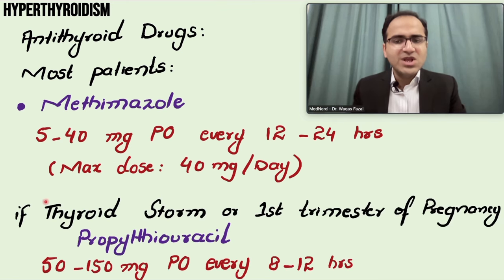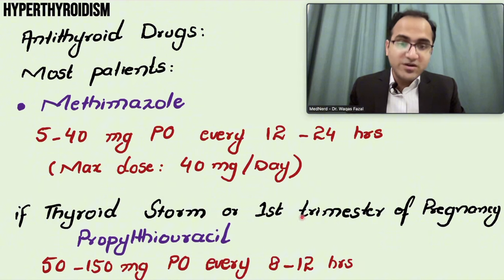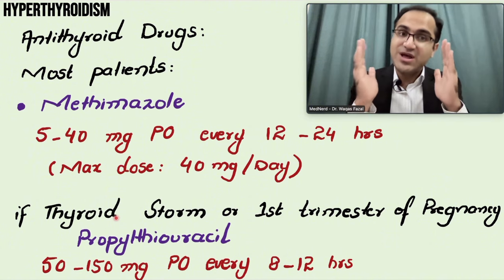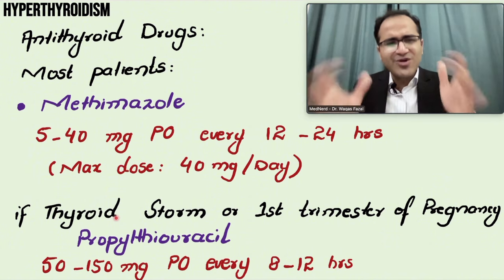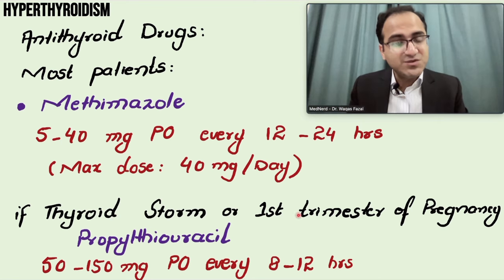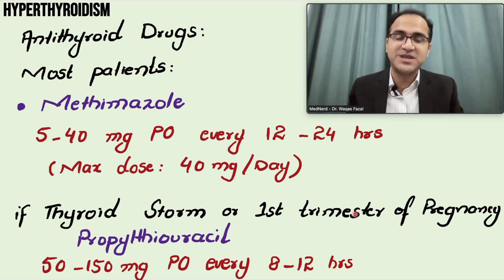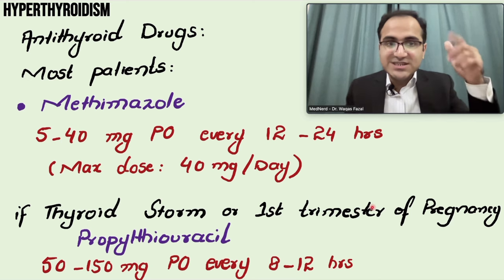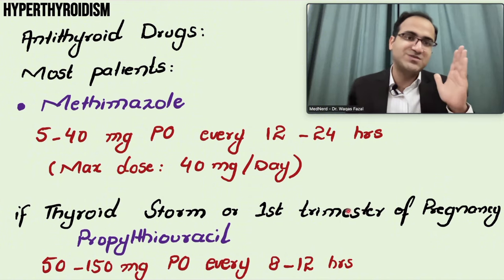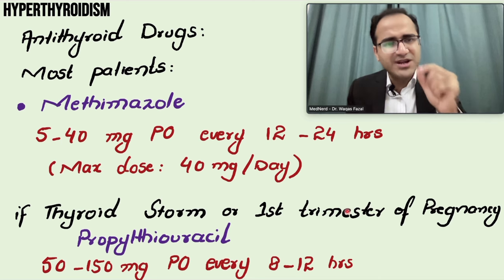If the patient is having thyroid storm or is in the first trimester of pregnancy, methimazole is not used. In thyroid storm, propylthiouracil is very effective - remember for exams, propylthiouracil is the main drug for thyroid storm. In patients with first-trimester pregnancy and hyperthyroidism, you cannot give methimazole because it is a teratogenic drug that causes aplasia cutis, where the skin is not properly formed.